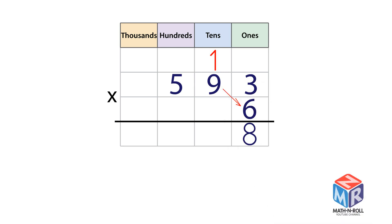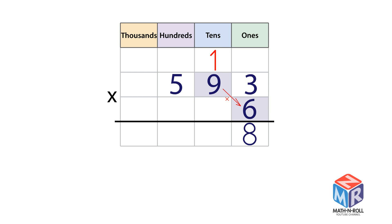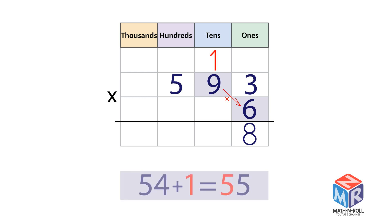Multiply the 10s. 9 × 6 tens equals 54 tens. Add the regrouped tens: 54 tens plus 1 ten equals 55 tens. Regroup 55 tens as 5 hundreds and 5 tens.